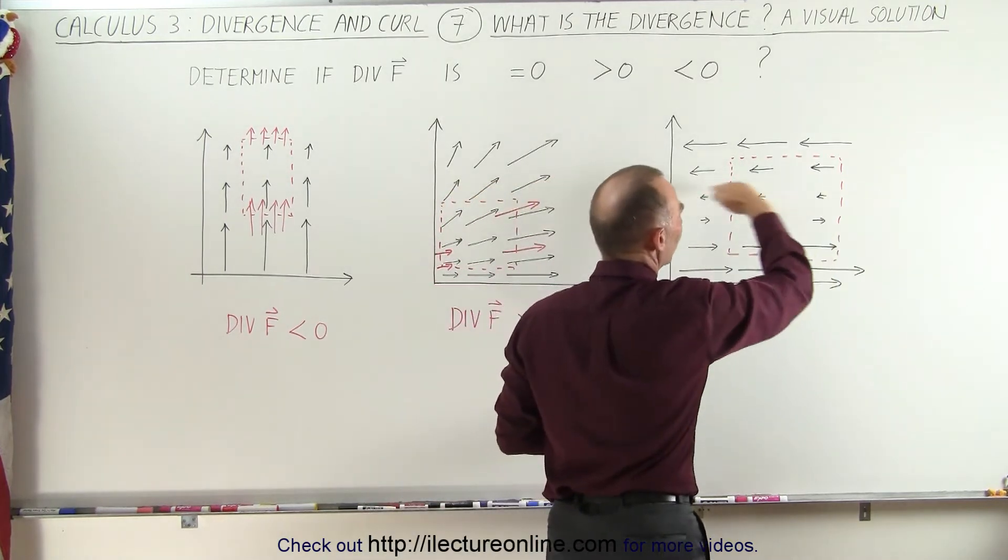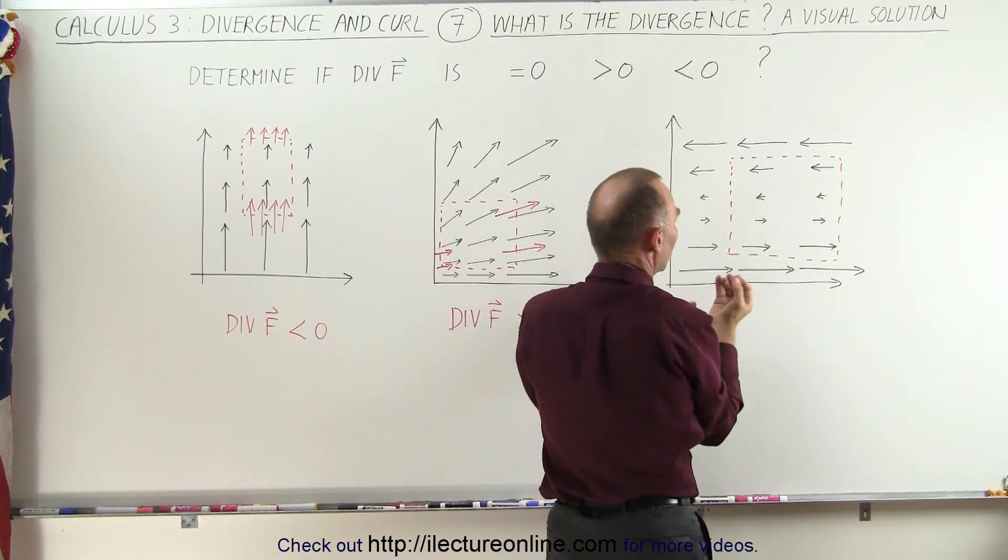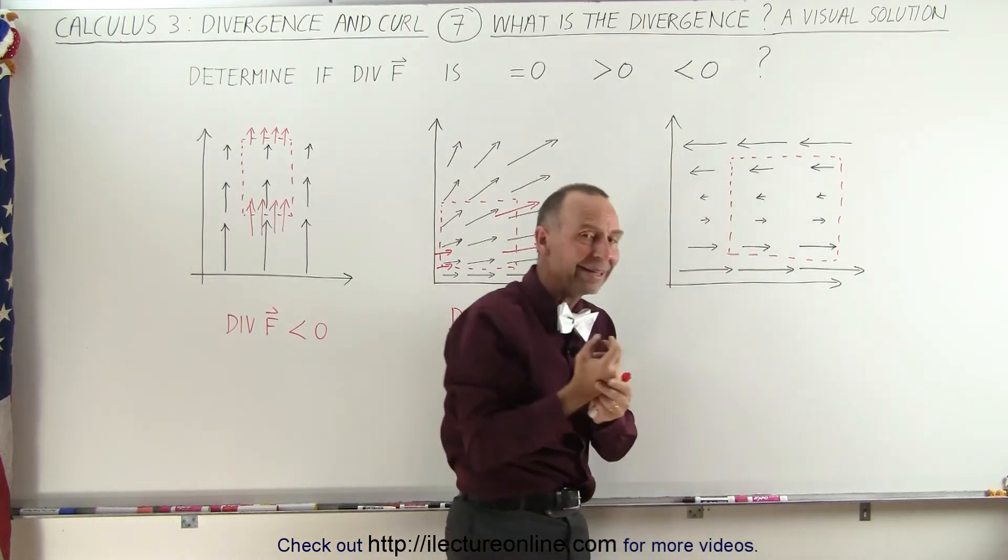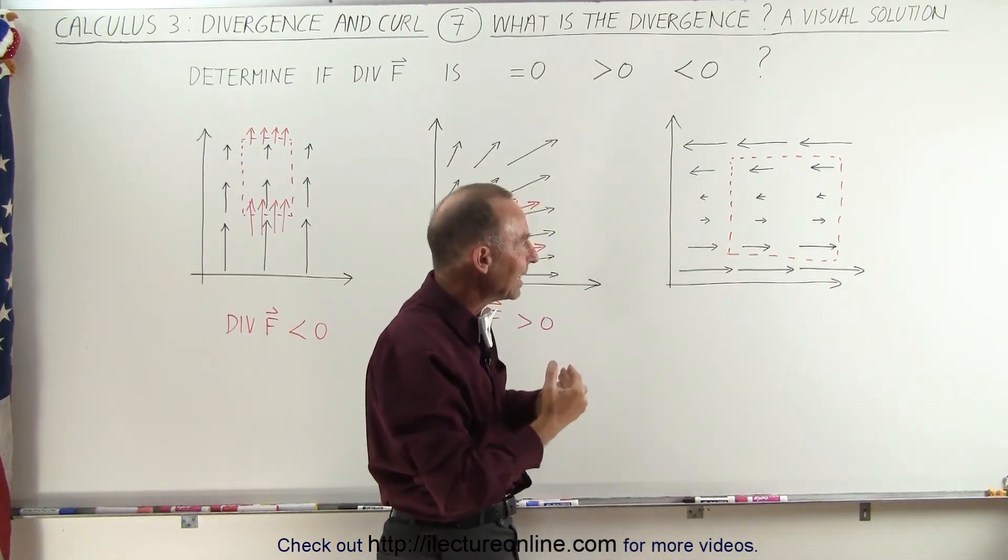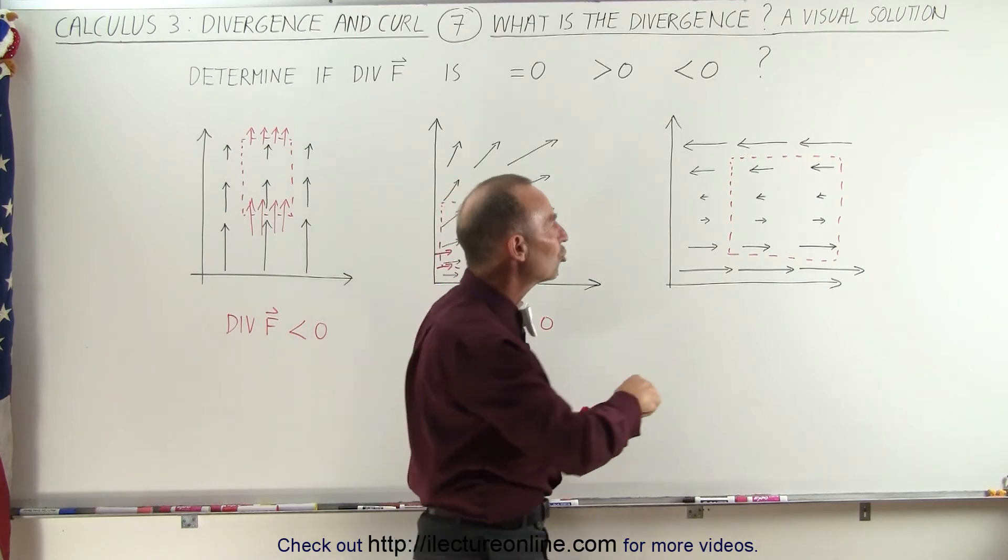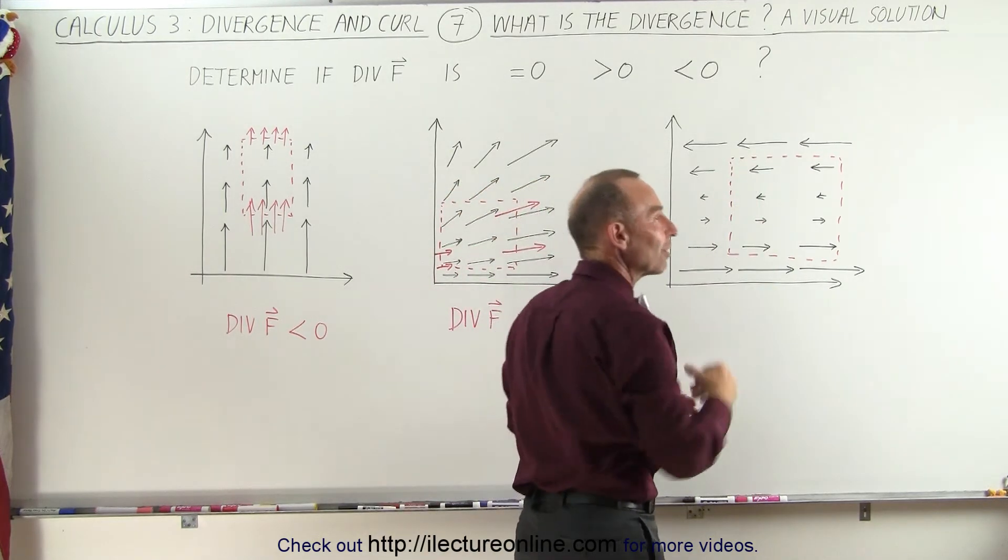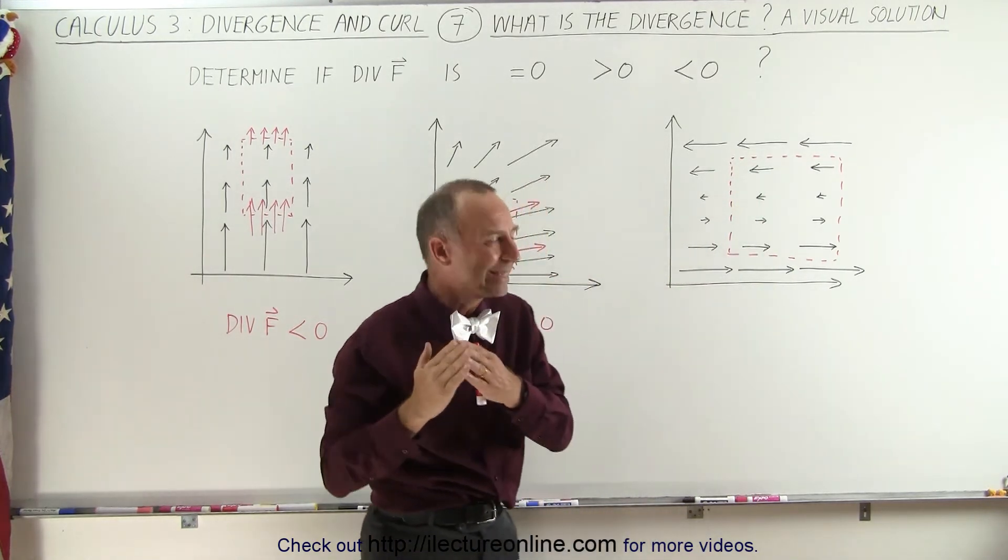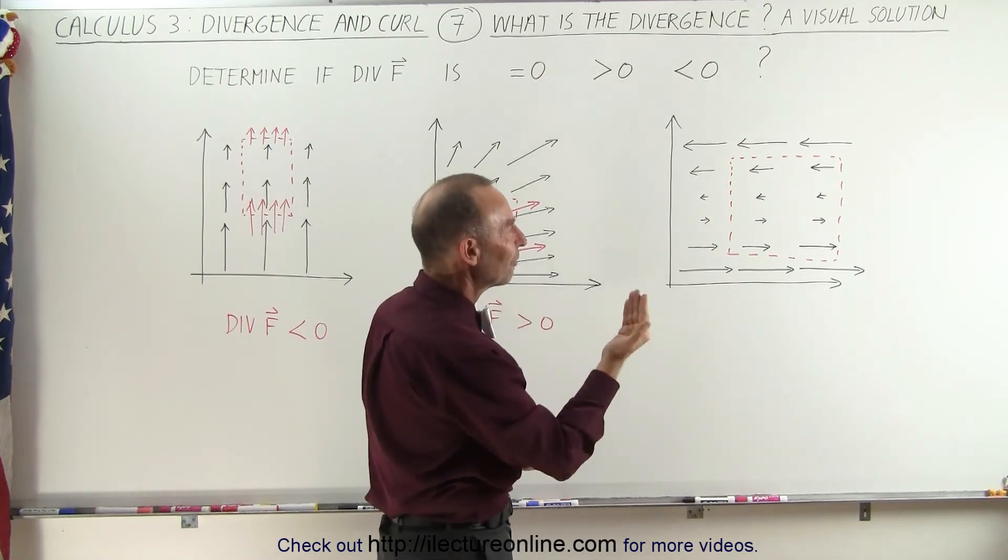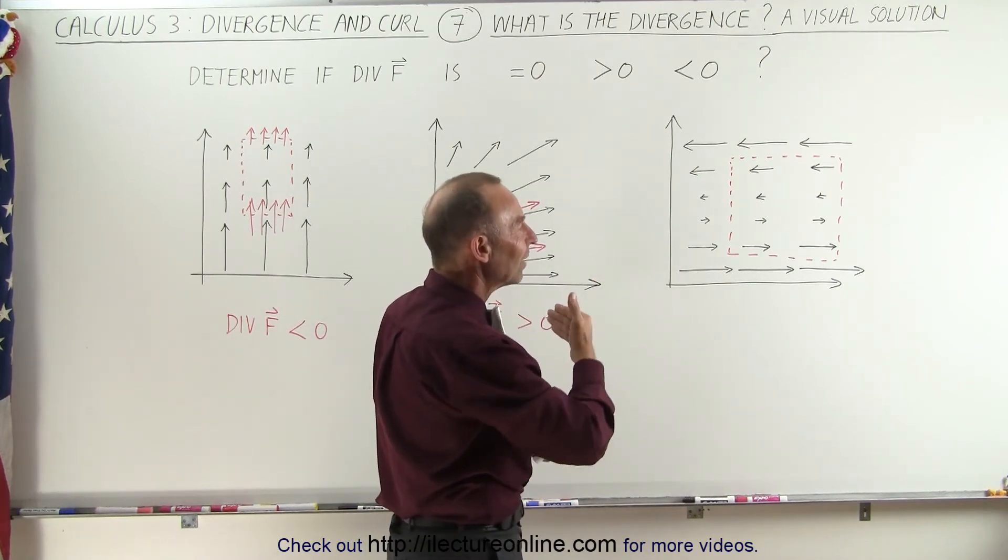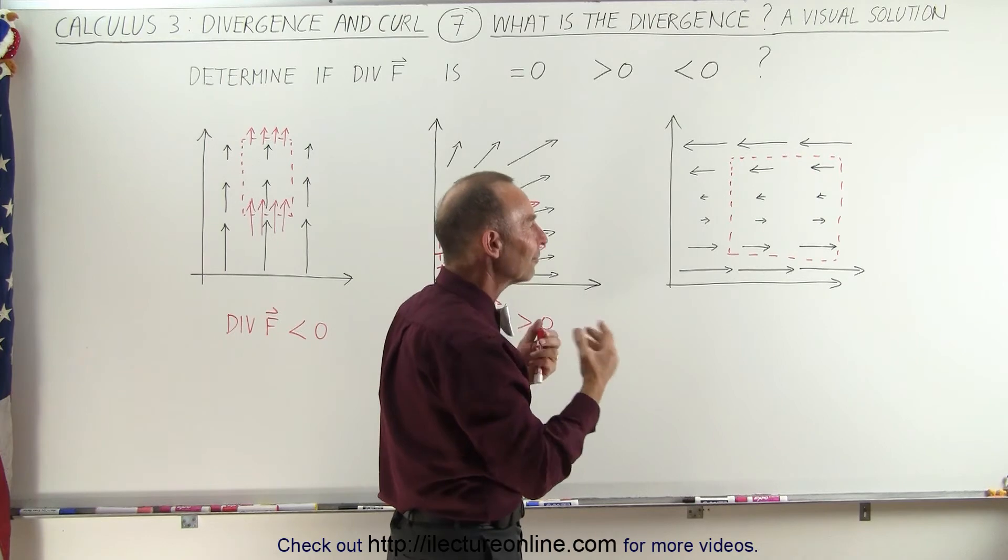Notice that the increase here is perpendicular to the direction of the vector field. The vector field goes from left to right. With other words, the magnitude of the vector field is in the i direction, in the x direction, and the change in the magnitude is in the y direction. So if the change is perpendicular to the direction of the vector field, it doesn't add or diminish any of the flux.